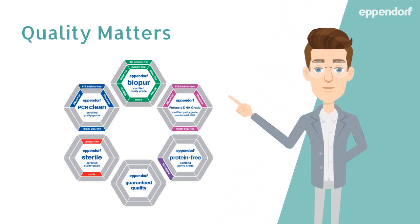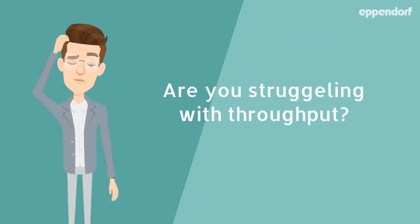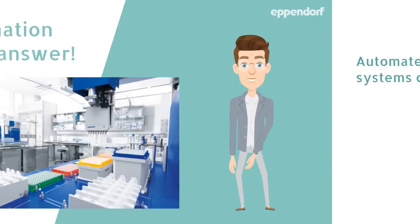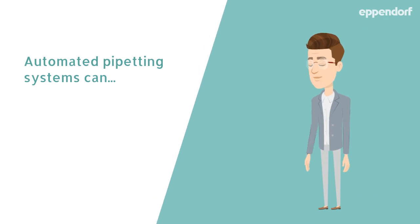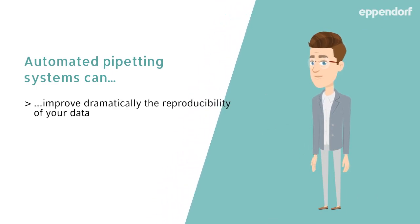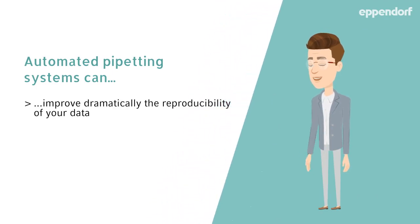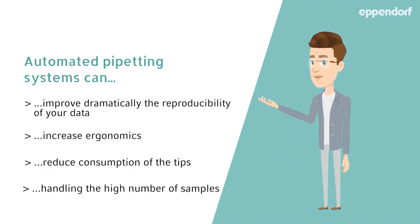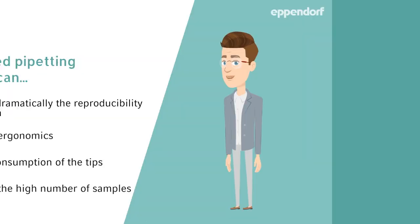Tip quality can affect your results. Be selective — always choose the pipette tip quality and purity required for your experiment. Automated pipetting systems can dramatically improve the reproducibility of your data, increase ergonomics, reduce consumption of tips, and handle a high number of samples.